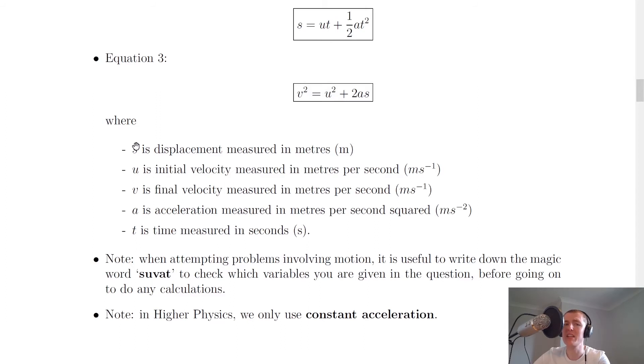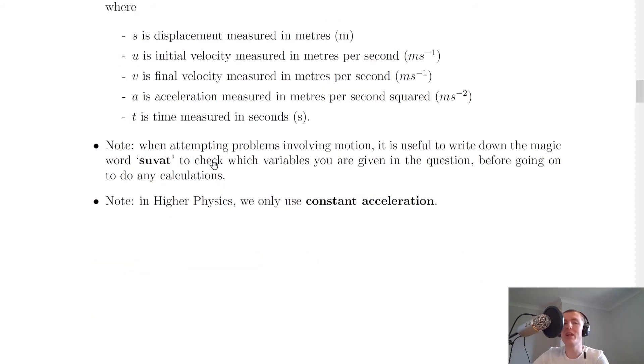Now notice that it says displacement here for s but sometimes a question might give you a distance instead so just use that in place of s. And it says here that when attempting problems involving motion it is useful to write down the magic word SUVAT first to check which variables you are given in the question before going on to do any calculations.